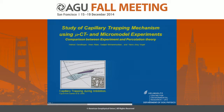The main focus will be on capillary trapping during imbibition. This process will happen at the trailing end of the CO2 plume, and if the plume moves upwards, then capillary trapping will reduce the volume step by step.